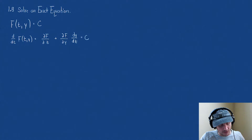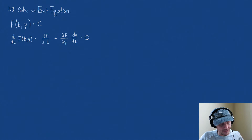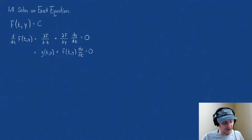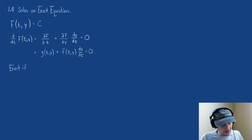If we took the derivative with respect to t of capital F of t and y, we said that this equals the partial of capital F with respect to t, plus the partial of F with respect to y times dy/dt, and all of that equals zero. This is an exact equation if the partial derivative of g with respect to y equals the partial derivative of f with respect to t.